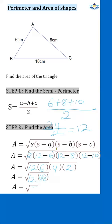So we need to find the square root of 576, and this is going to give me the area of this triangle to be 24 centimeters square. This is how we find the area of a scalene triangle.